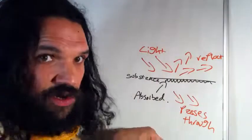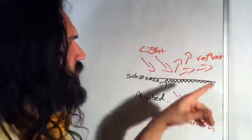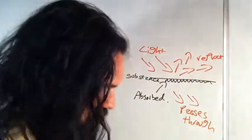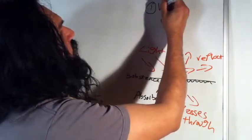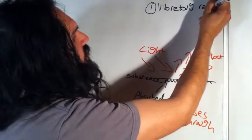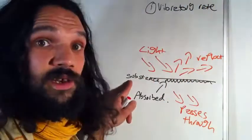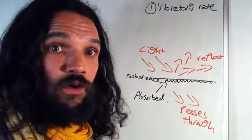Now what determines how much of each of these things happen? So sometimes some is always reflected, some is always refracted, some is always passed through, and some is always absorbed. There are two things which determine which happens. One is the vibratory rate of the receiving substance. If the vibratory rate of the substance is too high or too low, then the light will pass right through or bounce off.